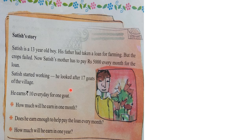In 1 day he will be earning Rs. 170, so for 30 days that means Rs. 170 × 30. That much money he will be earning, so we have to do multiplication. Does he earn enough to help pay the loan every month? We have to find out how much amount he will earn in 1 month. By looking at that amount, we will come to know whether he can be able to pay Rs. 5,000 for the loan or not.